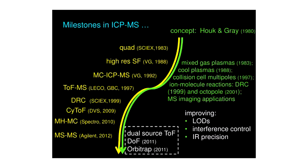Five years after the quadrupole, a high-resolution sector field instrument appeared, then a multi-collector sector field a few years later, followed by a time-of-flight mass spectrometer, dynamic reaction cell and collision cell spectrometers, a time-of-flight instrument introduced in 2009, a truly simultaneous multi-element multi-collector system in 2010 based on a Mattauch-Herzog geometry, and a triple quadrupole MS/MS instrument introduced as recently as 2012.